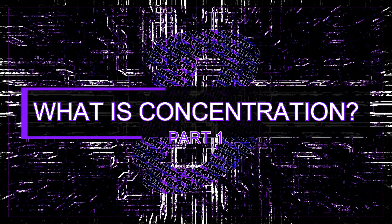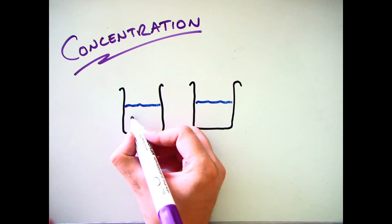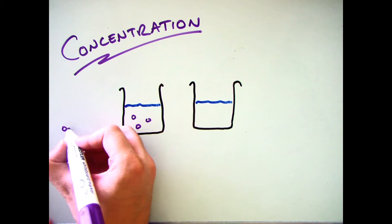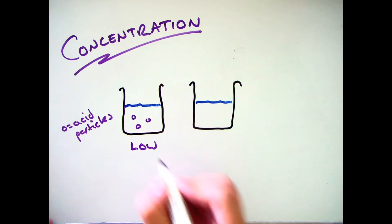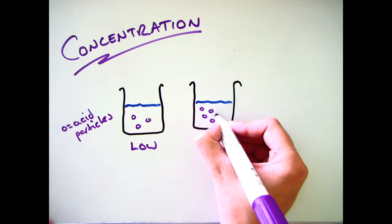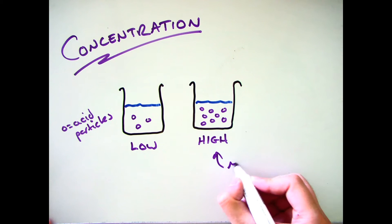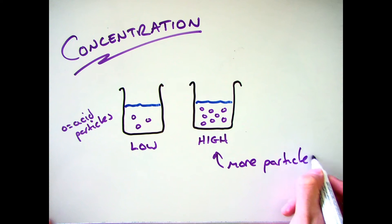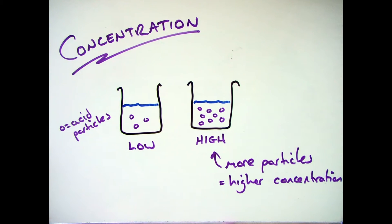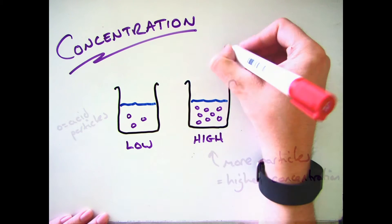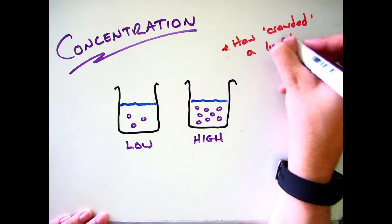The first thing we need to talk about is what is concentration. I want you to think about two liquids. You can see here that I've put in some acid particles and both liquids have the same volume. On the left one there is a low concentration because there are only a few of those acid particles in my solution, whereas on the right there are lots more, so we say that has a high concentration. A nice way to summarise it is: concentration is how crowded a liquid is.